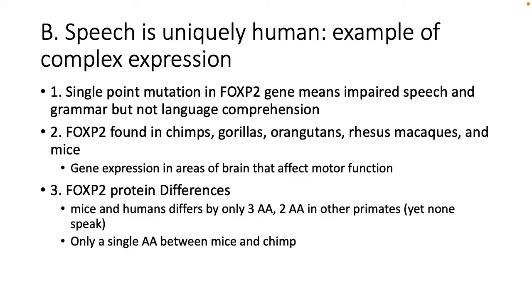Mice and humans differ by only three amino acids in the FOXP2 protein; in other primates, it's a difference of two amino acids. Yet none of these organisms — chimps, gorillas, orangutans, mice — speak. It's a very small difference. Culture is closely tied to the ability to control your larynx, mouth, and tongue to produce speech. If FOXP2 mutates in mice, they don't squeak, suggesting this gene plays a role in neuromuscular pathways to make sounds. FOXP2 mutations allow the brain and the larynx and the mouth to coordinate together to produce speech.